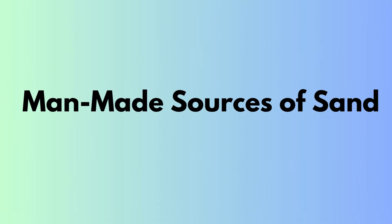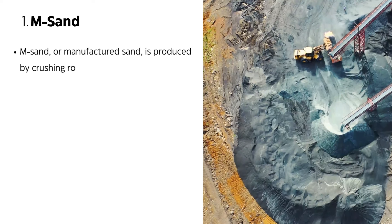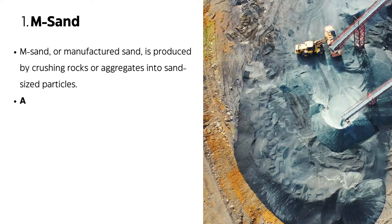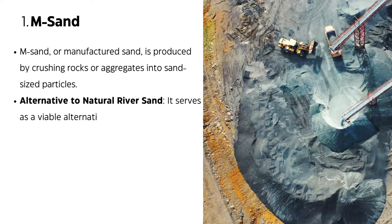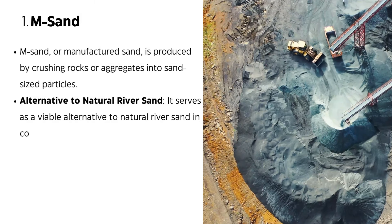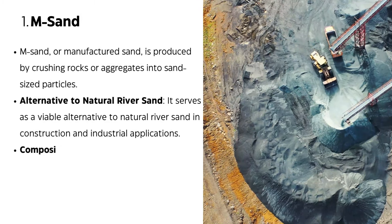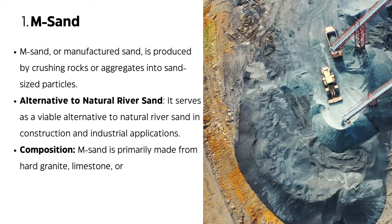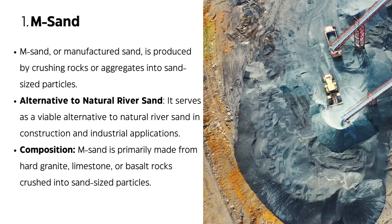M-sand, or manufactured sand, is a type of sand produced through crushing rocks or aggregates into sand-sized particles. It is a viable alternative to natural river sand in construction and industrial applications. M-sand is made primarily from hard granite, limestone, or basalt rocks that are crushed into sand-sized particles.